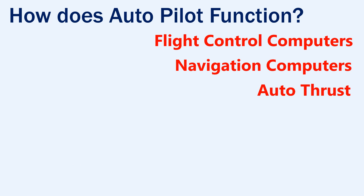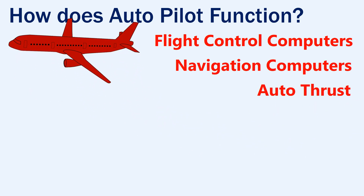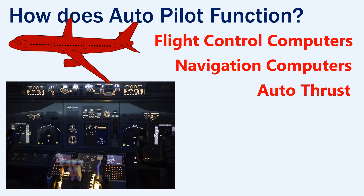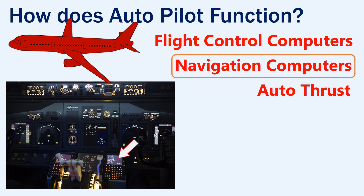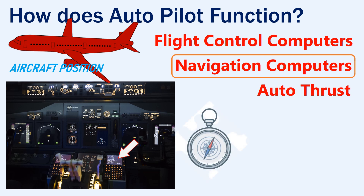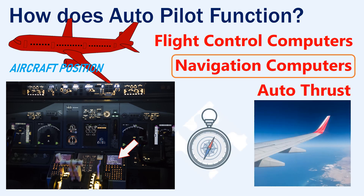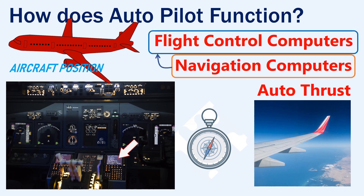The autopilot is also responsible for guiding the aircraft over a particular route. This pre-planned route or flight plan would have been inserted by the pilots into the autopilot computer. The autopilot uses the information from the navigation computers to determine the aircraft's position and to adjust the direction or altitude at which the aircraft is required to fly. This is done by sending information to different flight control computers to move different flight control surfaces.